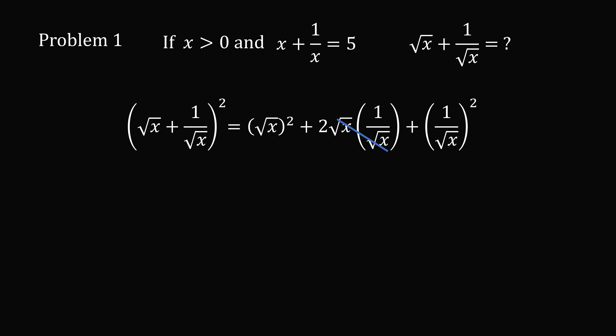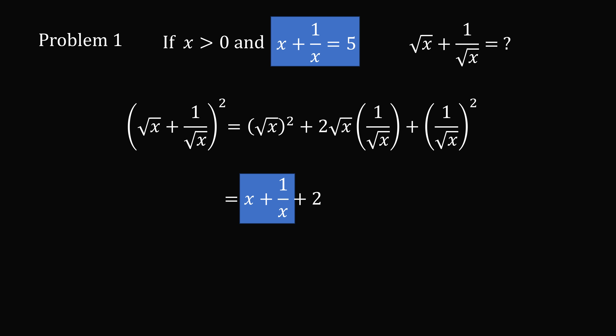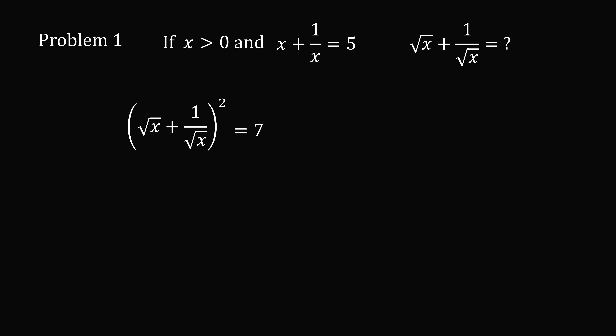So the square of root x equals x, the second term becomes 2, and the square of 1 over root x equals 1 over x. This all equals x plus 2 plus 1 over x. We rearrange to get x plus 1 over x plus 2. We know x plus 1 over x equals 5, so substituting gives 5 plus 2, which equals 7. Since the square of what we want is 7 and x is greater than 0, we take the positive square root: root x plus 1 over root x equals root 7.